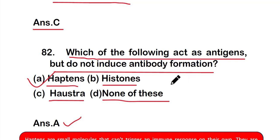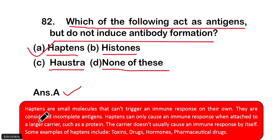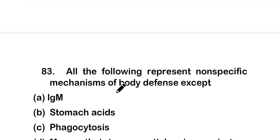Haptens are small molecules that cannot trigger an immune response on their own — they are considered incomplete antigens. Haptens only cause an immune response when attached to a large carrier such as a protein. Examples of haptens include toxins, drugs, hormones, and pharmaceutical drugs — none of which can trigger an immune response alone.